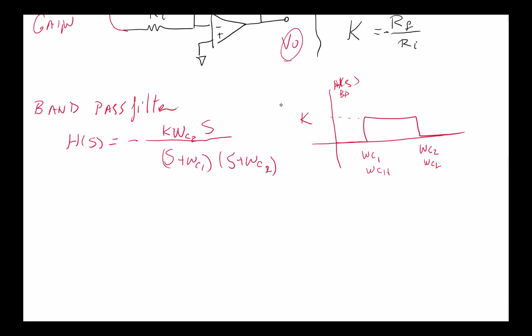Just to reassess the cutoffs: the higher cutoff frequency will be the same as omega c low pass, which is 1 over RL CL, so that would be the higher cutoff frequency. The lower cutoff frequency would be the same as the cutoff frequency for high pass, which is 1 over R high pass C high pass.